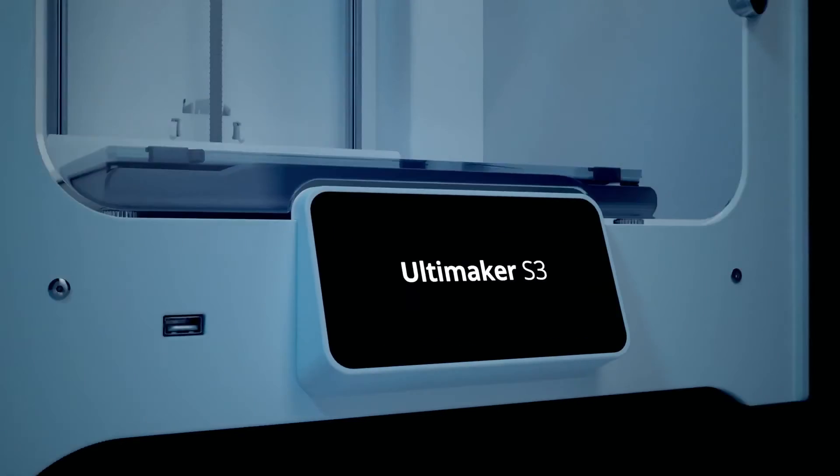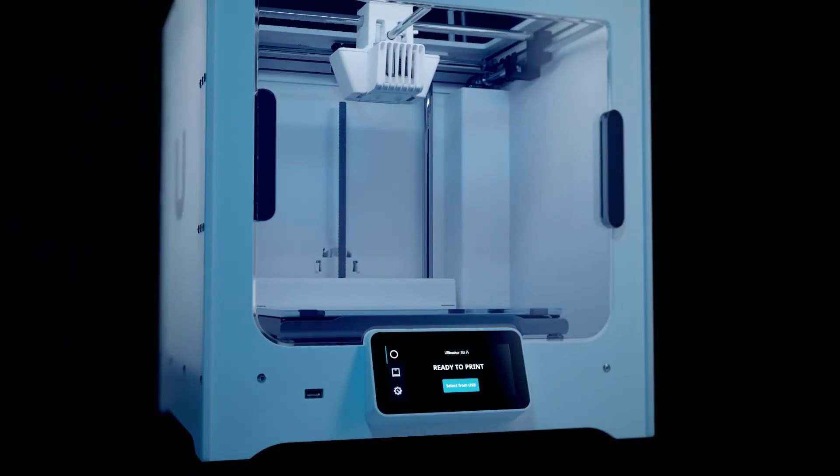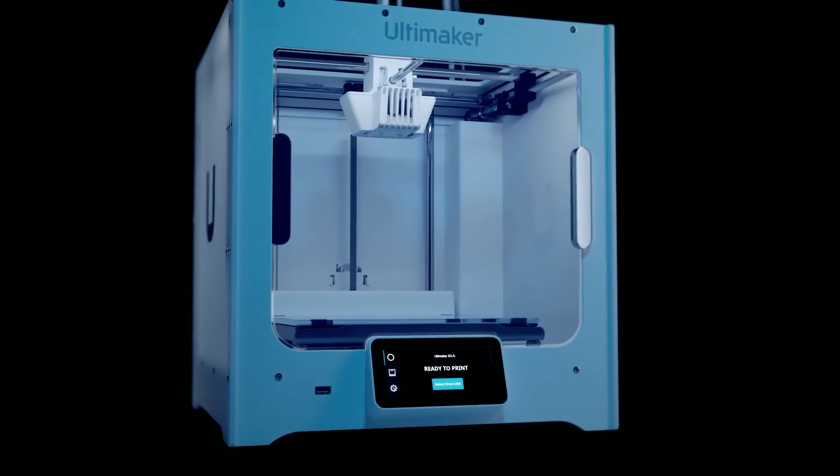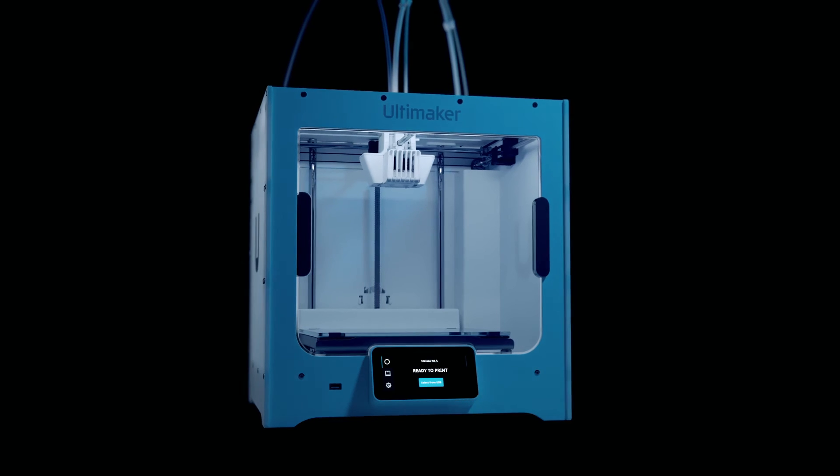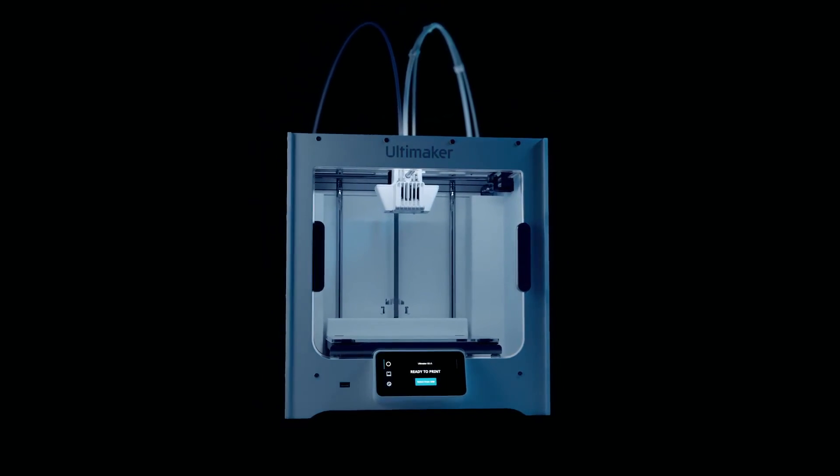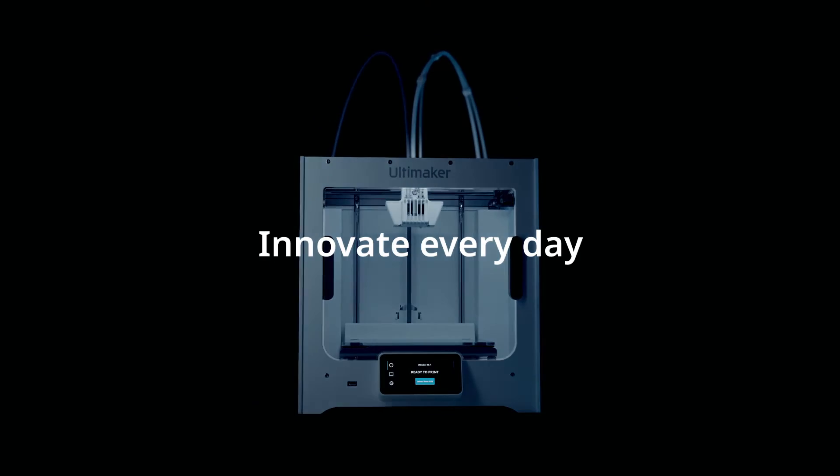These all work together seamlessly to achieve the reliability and accuracy you need from a desktop 3D printer. Powerful and easy to use, the Ultimaker S3 is the most cost-effective way for disruptive businesses to adopt in-house 3D printing.